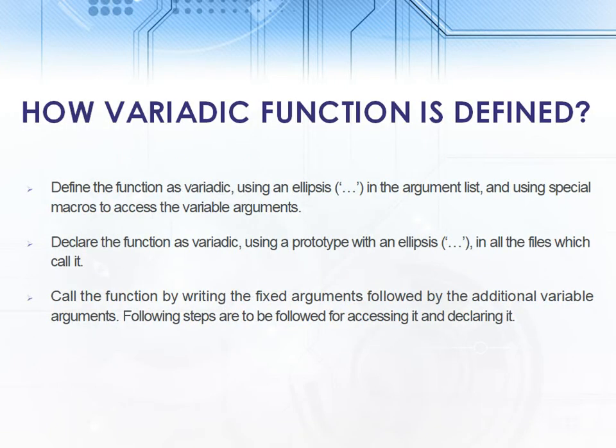How is a variadic function defined? To define the function as variadic we have to use ellipsis. Ellipsis is variable arguments in the argument list. We can access these ellipsis by using special macros present in header file called stdarg.h.